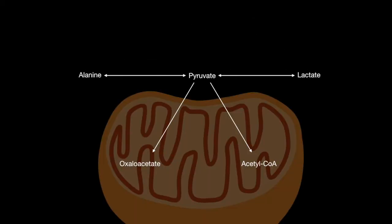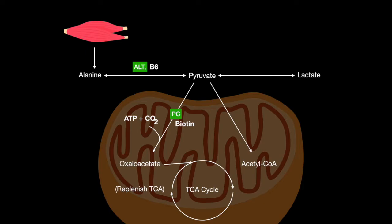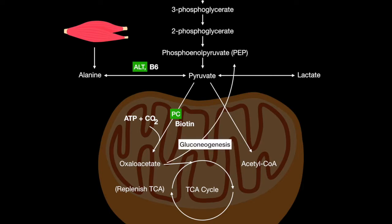Pyruvate has four different metabolic pathways. Muscles can be catabolized into alanine, which is carried to the liver to be turned into pyruvate by a B6-dependent alanine aminotransferase. Biotin-dependent pyruvate carboxylase can refill the oxaloacetate for the TCA cycle, or turn into phosphoenolpyruvate for gluconeogenesis.